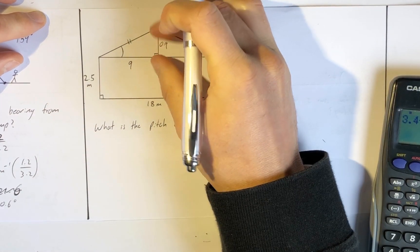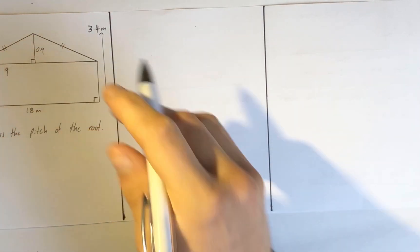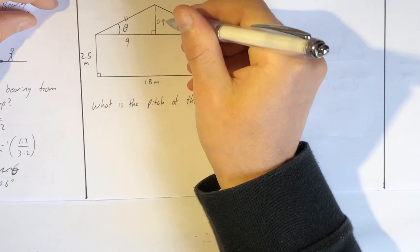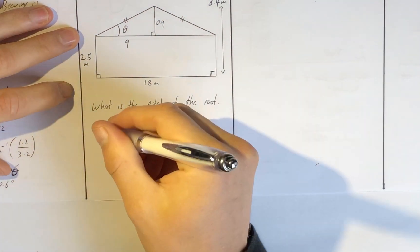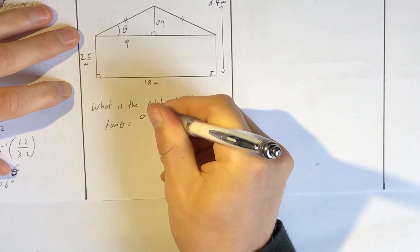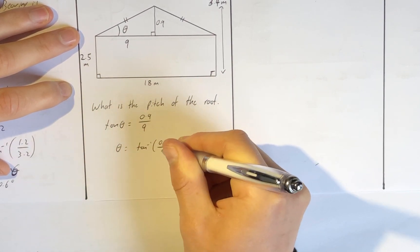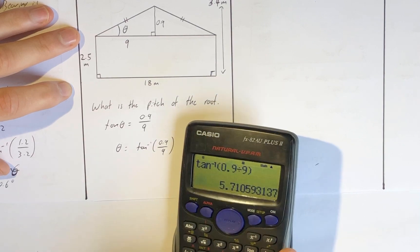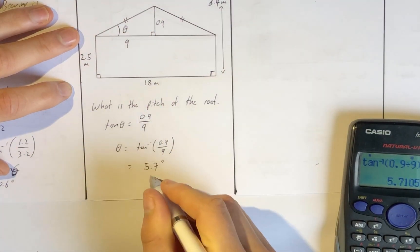You'd expect this angle to be quite low because that's a very short distance and that's quite a long distance. How do I find that angle? I label it first, give it theta. I'm using O and A again, so I've got tan theta equals O over A. Then I just want the angle so I go tan inverse of 0.9 divided by 9, and that equals 5.7 degrees. So the pitch of this roof is at 5.7 degrees, so it's quite low.